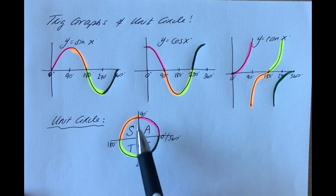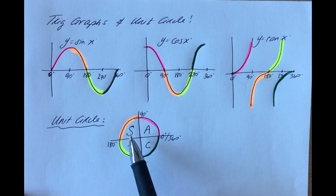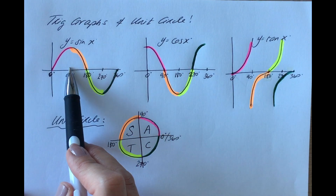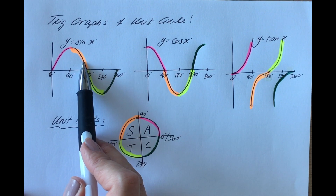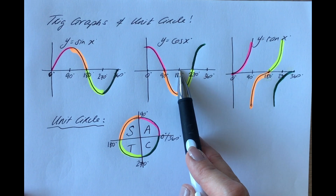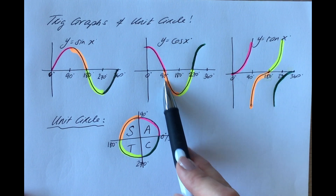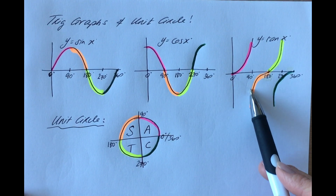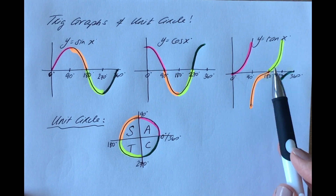The S quadrant stands for: between 90 and 180 degrees, only the sine curve is positive. Looking at the graphs: between 90 and 180, the sine curve is still above the x-axis, so positive. However, the cos curve between 90 and 180 is below the x-axis — that's negative. For any angles between 90 and 180, the cos gives negative results. The tan also gives negative results between 90 and 180 because it is below the x-axis there.